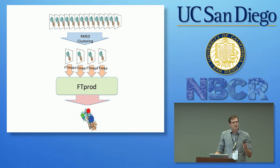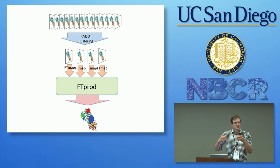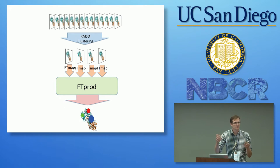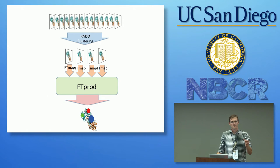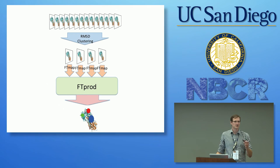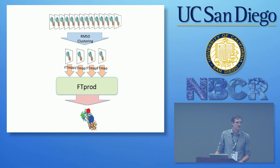Also, you can choose which chain IDs are included in the calculation. I wonder if that's somehow affecting it — when you enter the structure, you can define which chains it actually considers in the calculation.